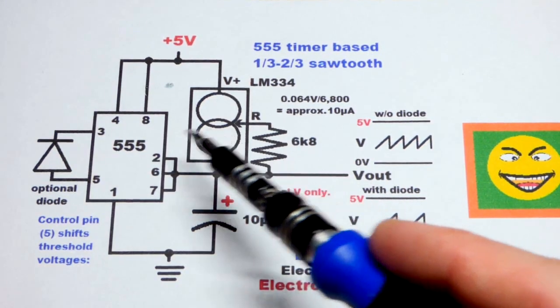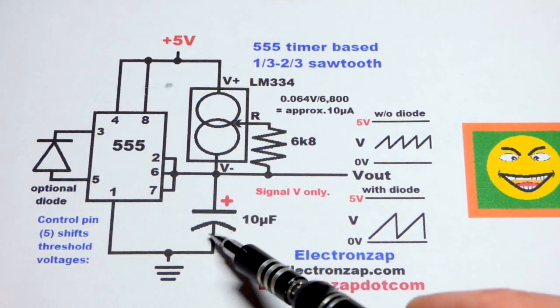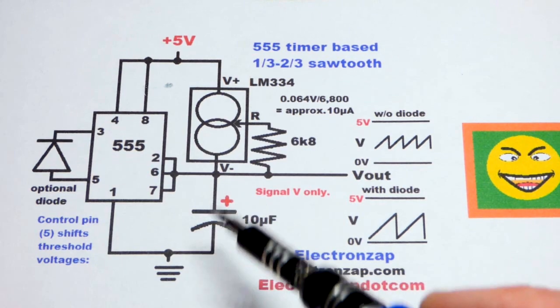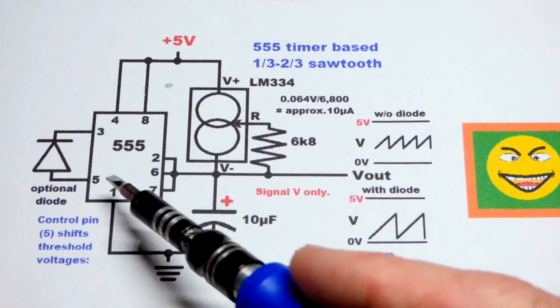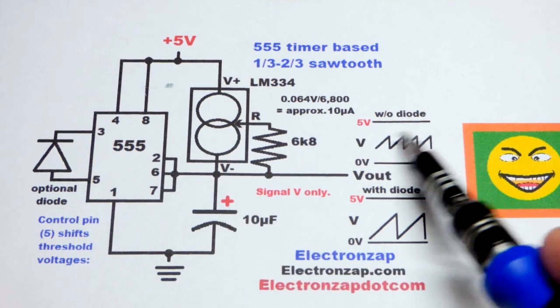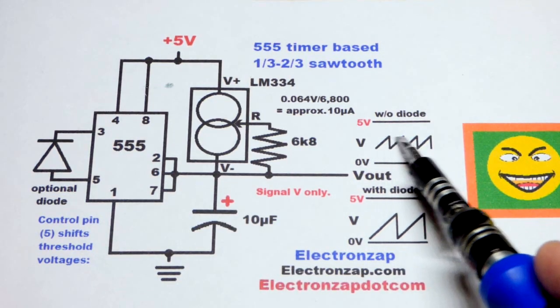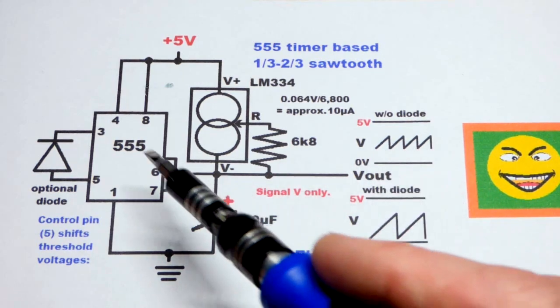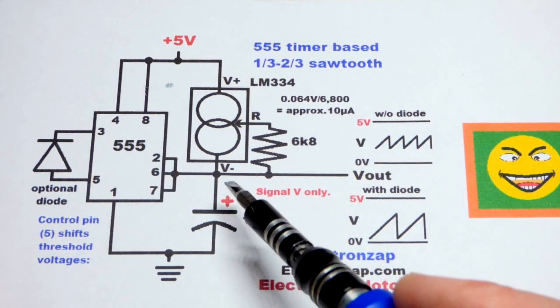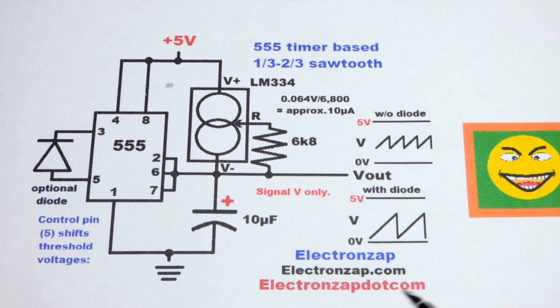When it comes to the timing of the 555 timer, it depends on a capacitor, how charged and discharged it is. If you don't alter the internal voltage divider, it's looking for one-third of the supply voltage to two-thirds of the supply voltage, and it responds accordingly to keep charging and discharging the capacitor between those two points.